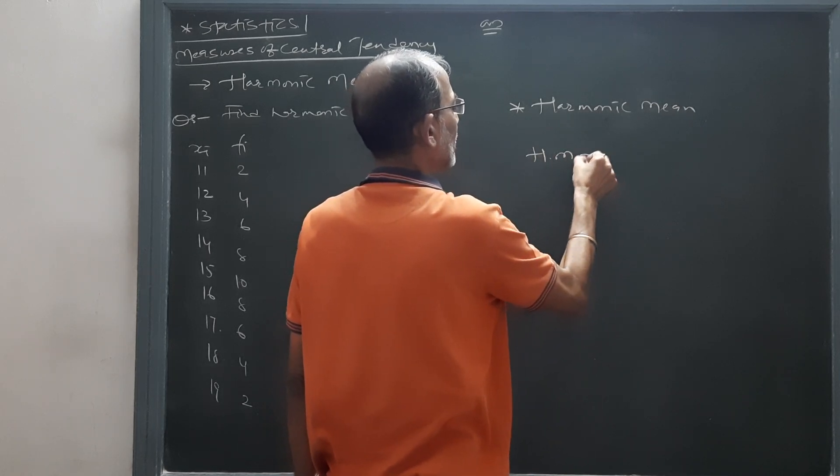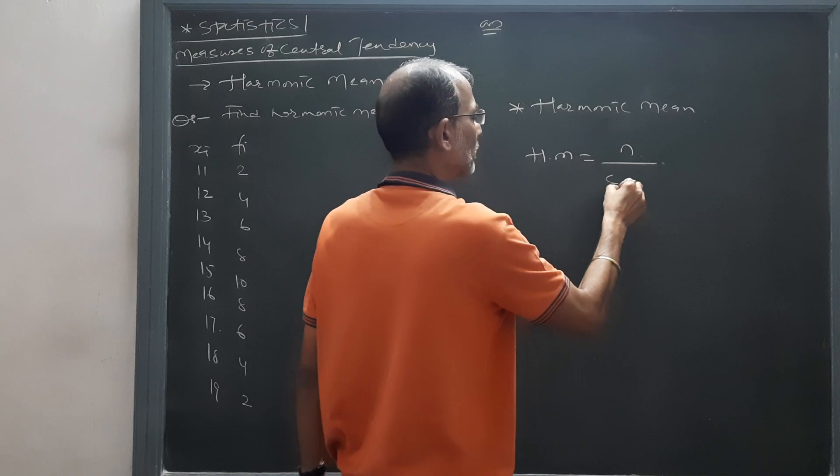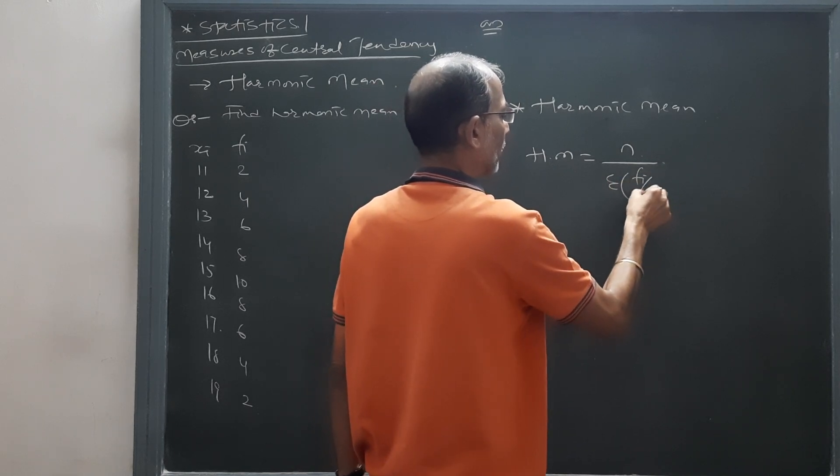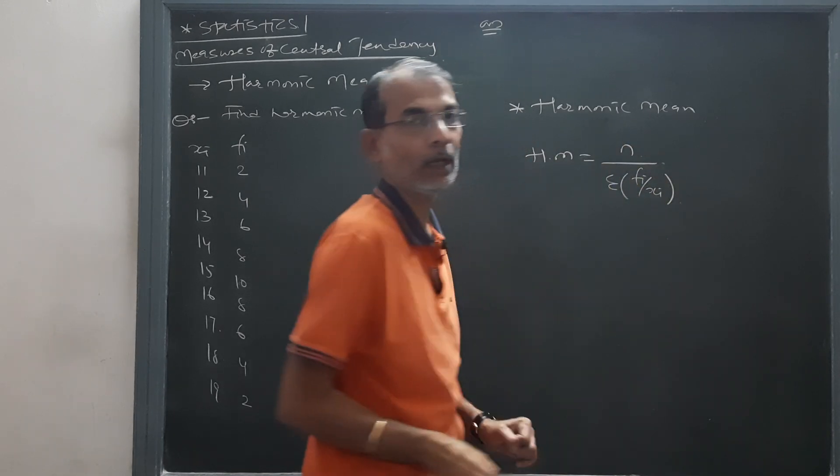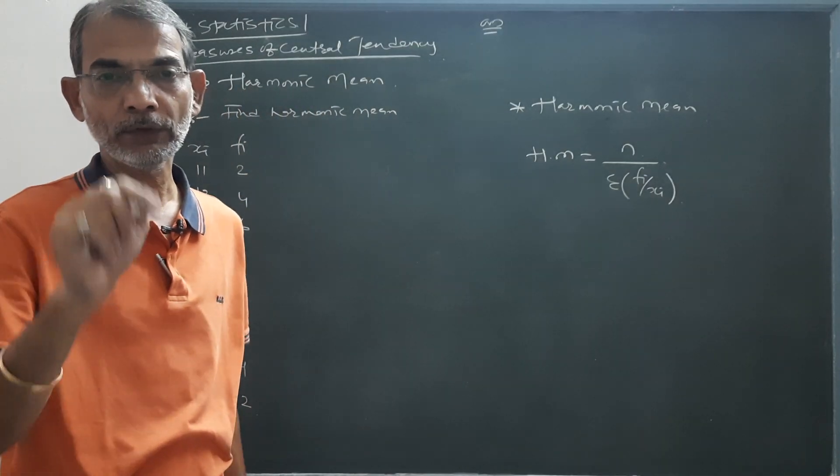First of all, the formula for the harmonic mean in discrete series is HM = n / Σ(fi/xi). That means first of all we have to prepare the column of fi/xi.